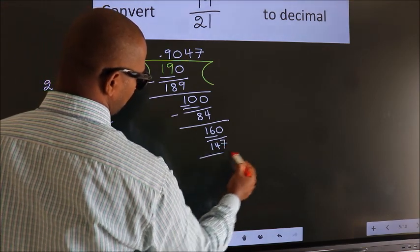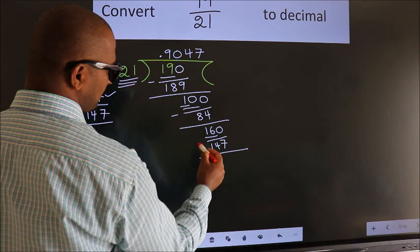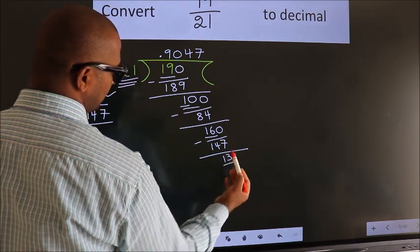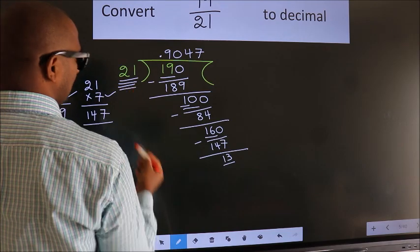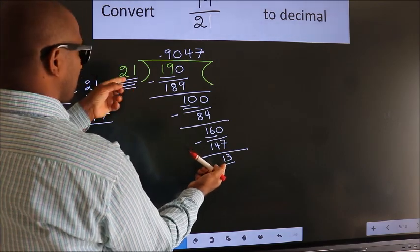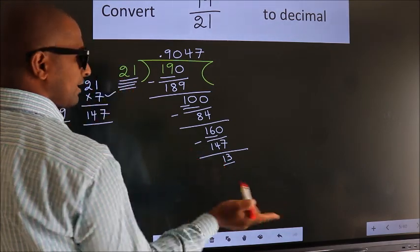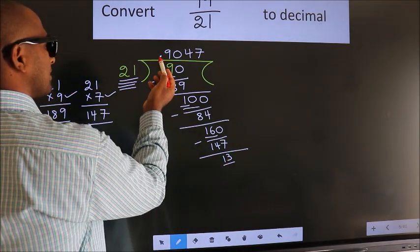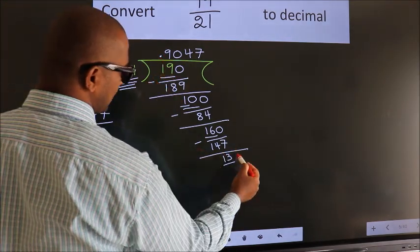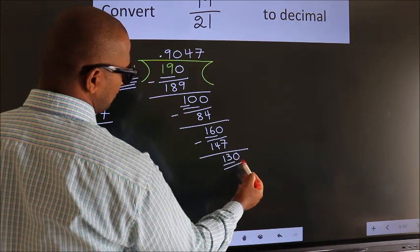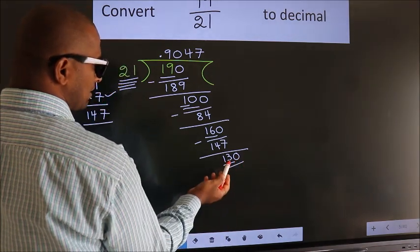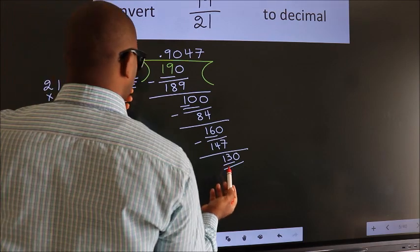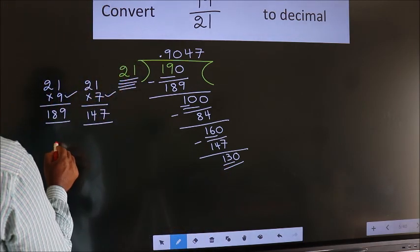147. Now we subtract and get 13. Here we have 13 and 21 — 13 is smaller than 21. We already have the decimal, so we can directly take 0, giving us 130. A number close to 130 in the 21 table — we go with 6.